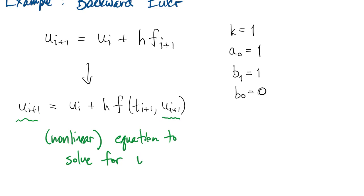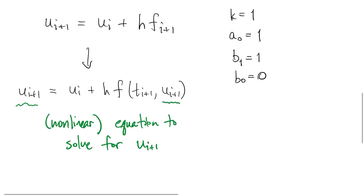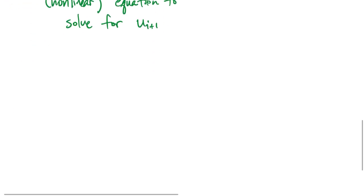If u is a vector, then it's actually a system of equations. Let me describe two important families of multi-step methods, though there are others.